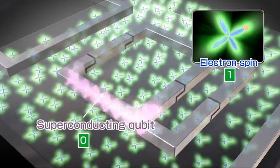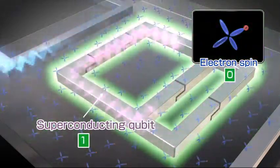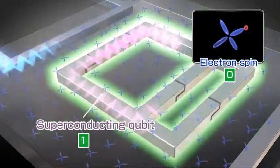By controlling the direct current applied to the control line, it is possible to move the energy back and forth. Thus, we can write quantum information from the superconducting qubit to the spins or read it back.